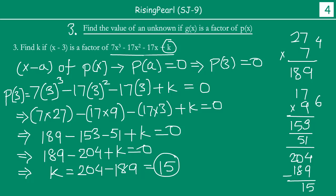So this was the third type of question. Interestingly, you are given a factor and asked to find an unknown constant k in the polynomial when one factor is already given. Hopefully you are following along. If you have any questions, please feel free to send a comment and we will be more than happy to answer your clarifications. Thank you.